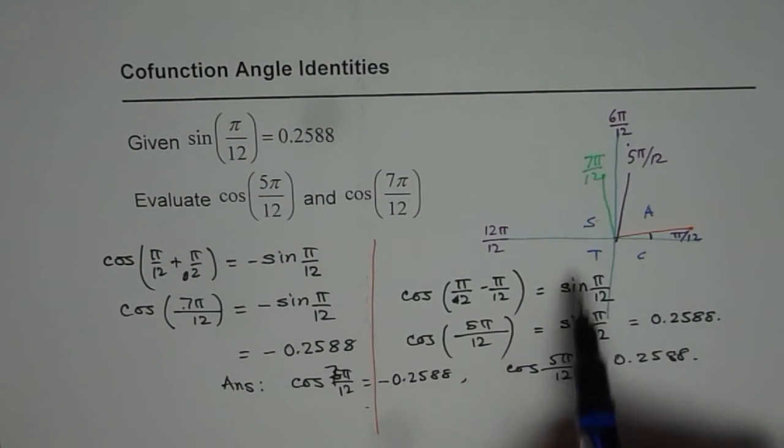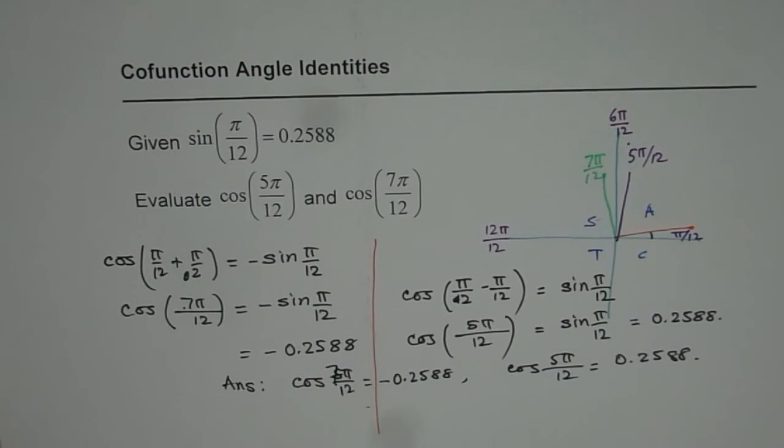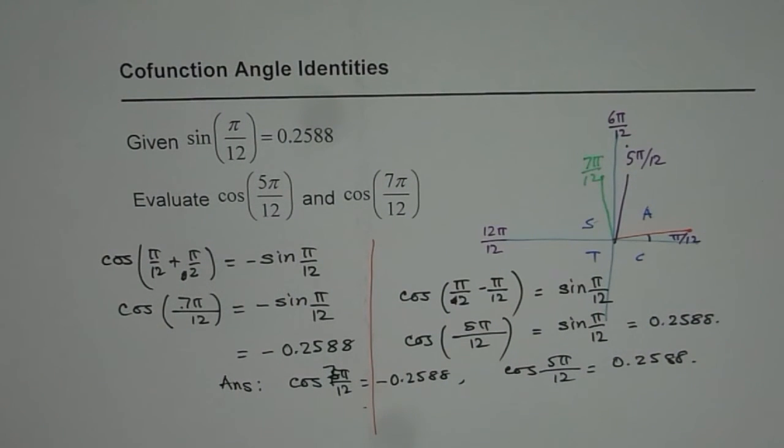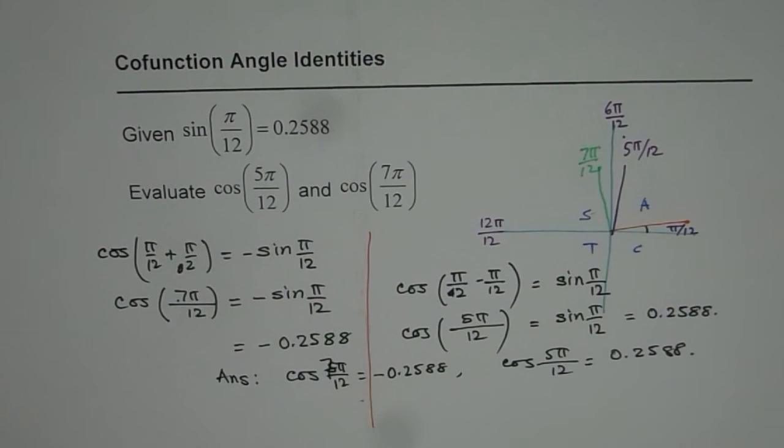7π/12 is in quadrant 2, it is negative, 0.2588. I hope with this you also understand how to really apply cofunction identities and find the values. Thank you.